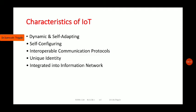The second characteristic is self-configuring. IoT devices may have self-configuring capability, allowing a large number of devices to work together to provide certain functionality. These devices have the capability to configure themselves, set up the network, and fetch the latest software upgrades with minimal manual or user intervention.